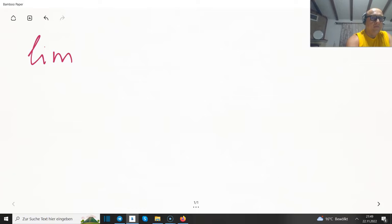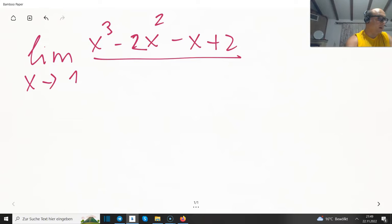With limit x towards 1, x³ minus 2x² minus x plus 2, and we are dividing by x³ minus 7x plus 6. So what's happening here? If I put 1 for x, what am I going to get in the numerator? Well it's zero. And what's happening in the denominator? It's zero again.